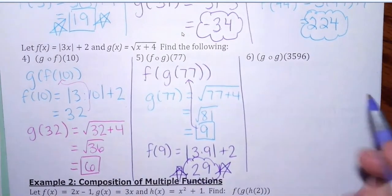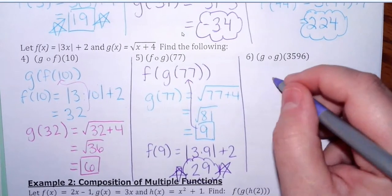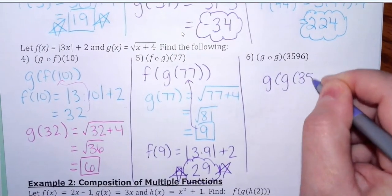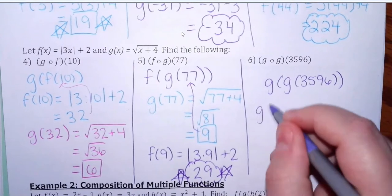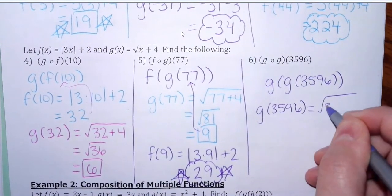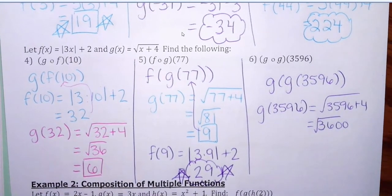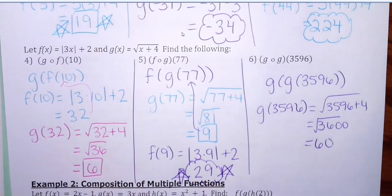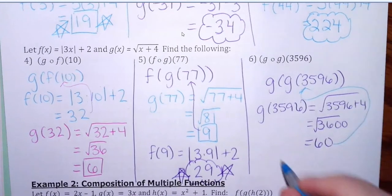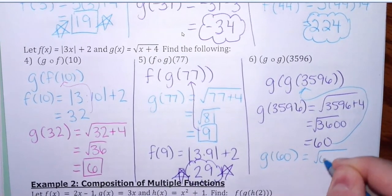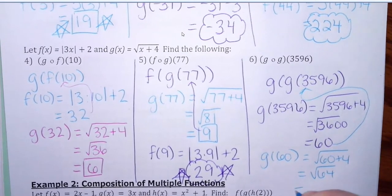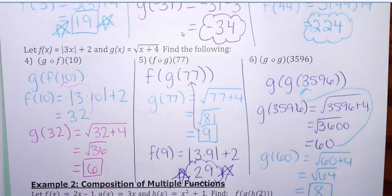You can compose a function with itself. This is g of g of 3596. We're going to plug that into the g of x function: 3596 plus 4 gives 3600. Don't put the plus and minus — you did not introduce that square root. So the square root of 3600 is 60. Then plug 60 back in to get the final answer: g of 60 is square root of 60 plus 4, which is square root of 64. Don't put the plus and minus — the answer is 8.